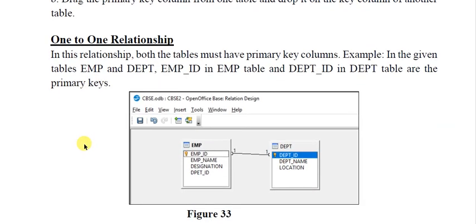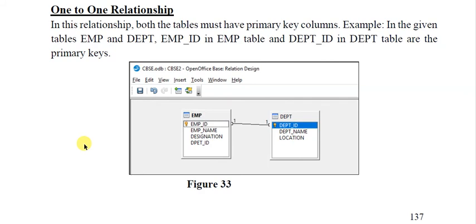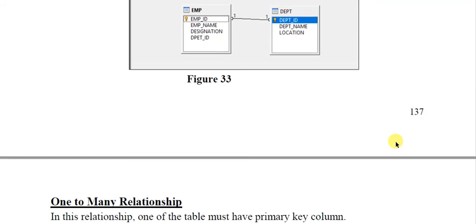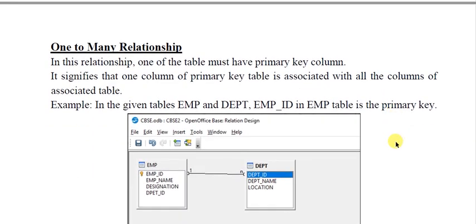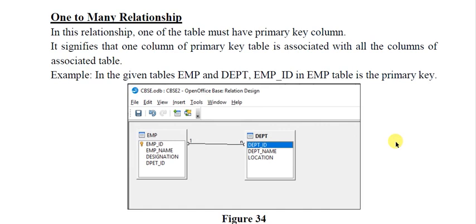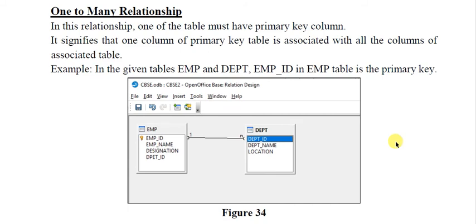In a one-to-one relationship, both tables must have primary key columns. For example, in the tables 'emp' (employee) and 'dept' (department), emp_id is the primary key in one table and department_id is the primary key in the other — this is a one-to-one relationship. In a one-to-many relationship, one of the tables must have a primary key column. It signifies that one column of the primary key table is associated with all the columns of the associated table. Here emp_id is the primary key and it is connected to dept_id.